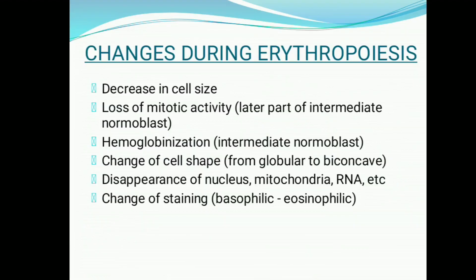The changes during erythropoiesis refer to the characteristics observed in the nucleus and cytoplasm. These include: a decrease in cell size, loss of mitotic activity, change in cell shape, disappearance of the nucleus and other cell organelles, and a change in staining from basophilic to eosinophilic.